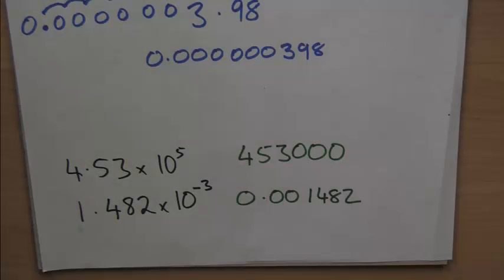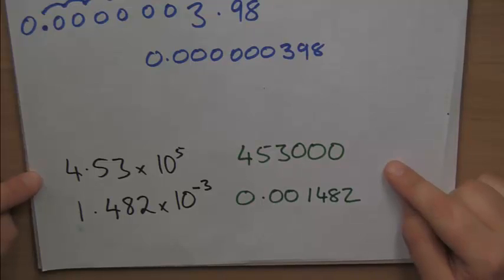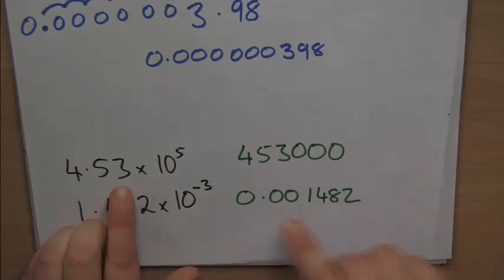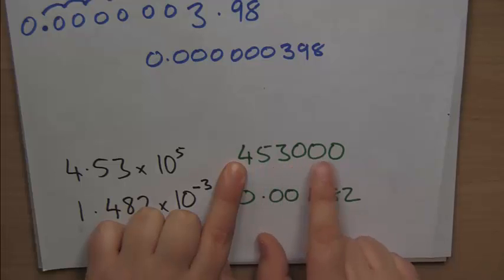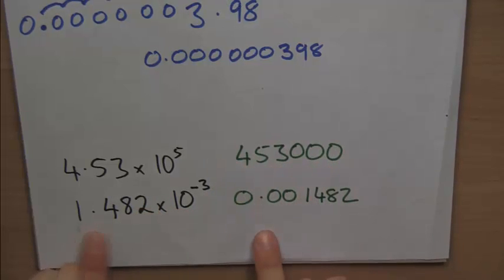OK, here's our answers. The first one we should have got 453,000. Let's just check using the previous method I showed you. We've got the 4, and then 5 numbers behind it. 1, 2, 3, 4, 5. Done.